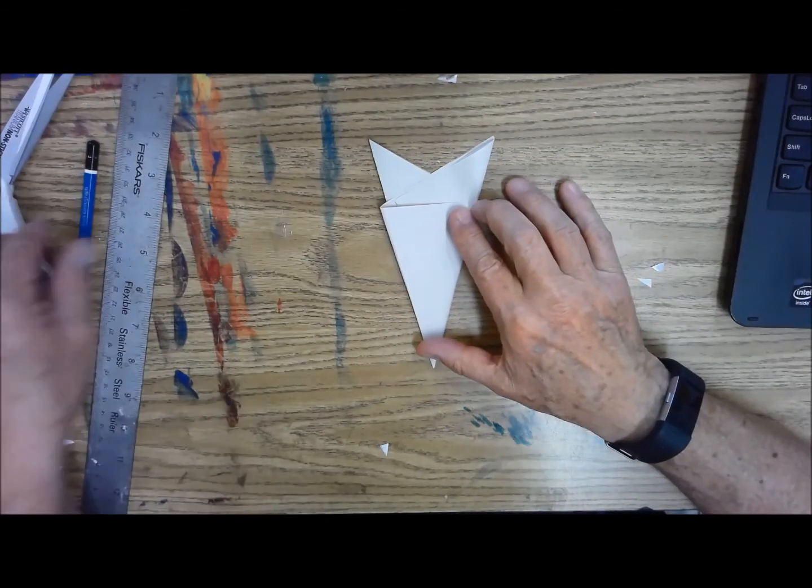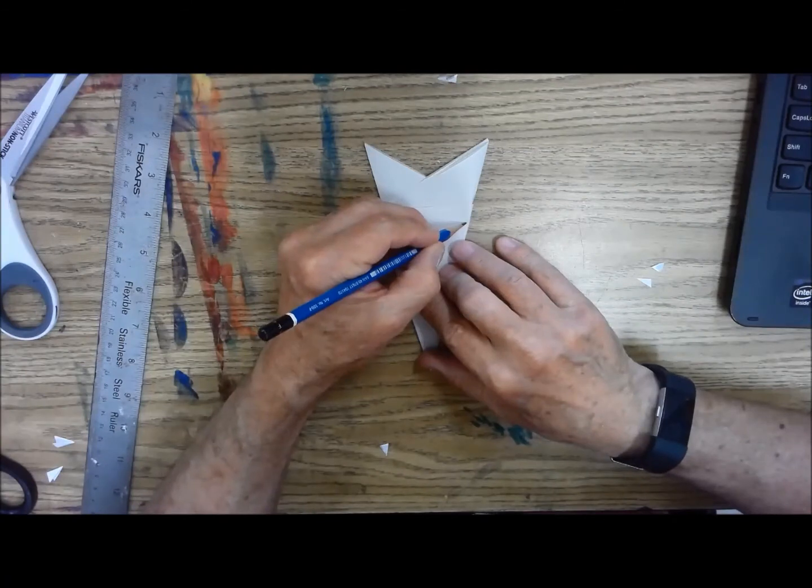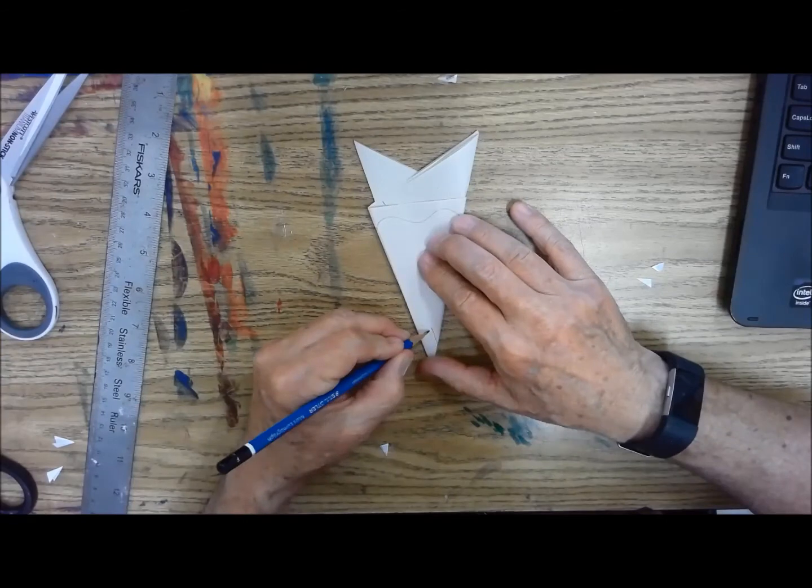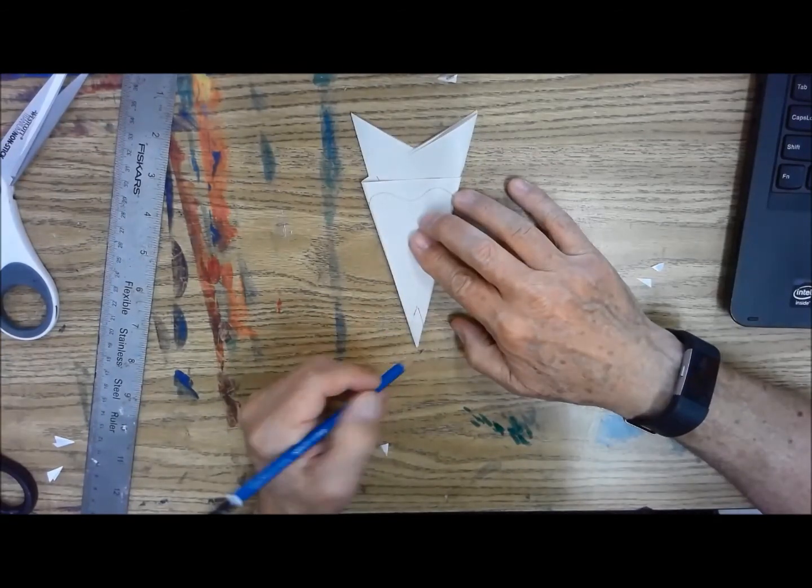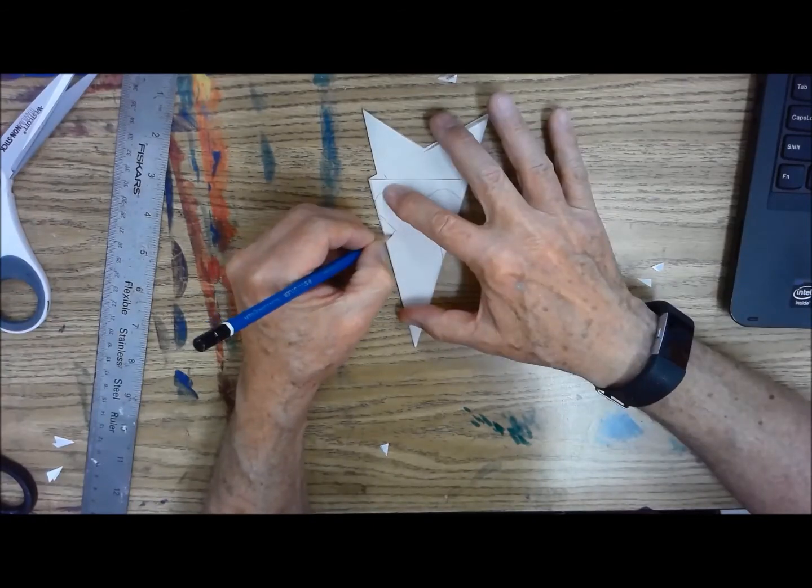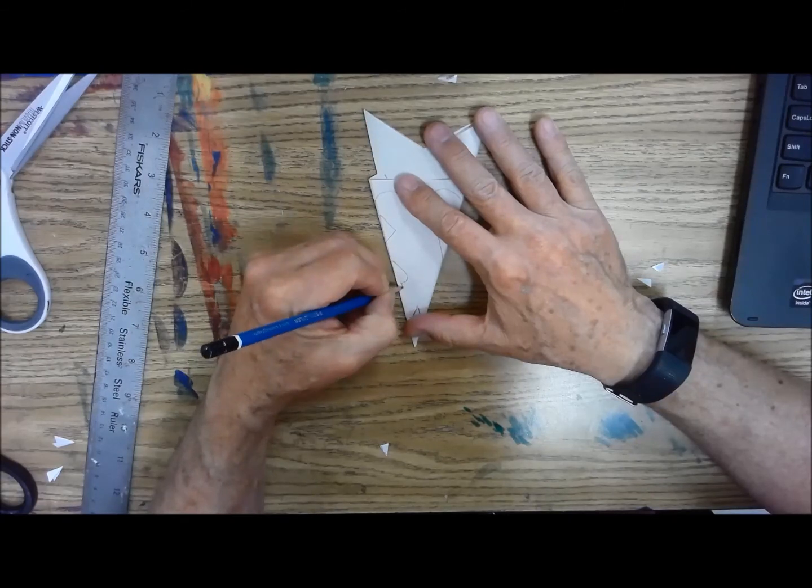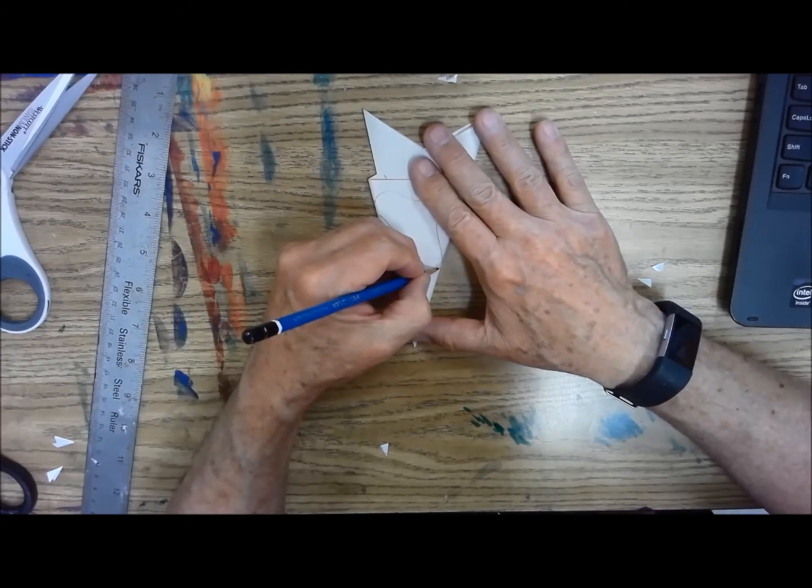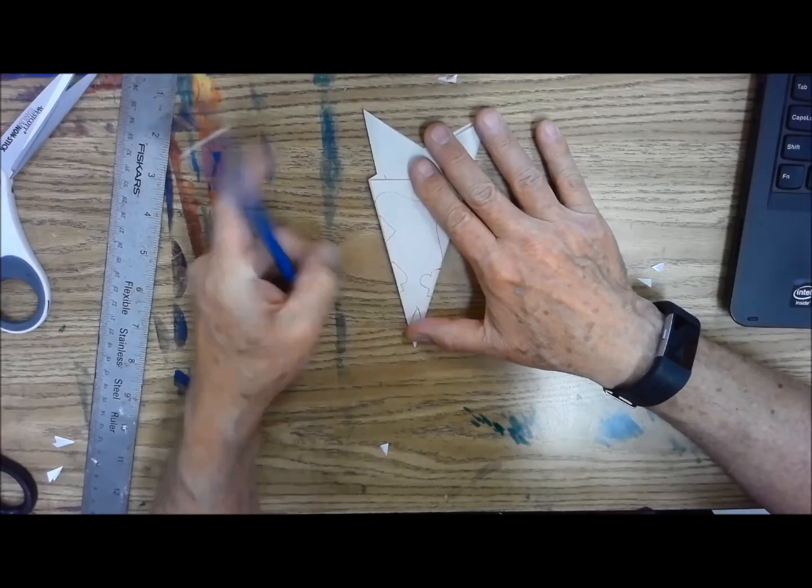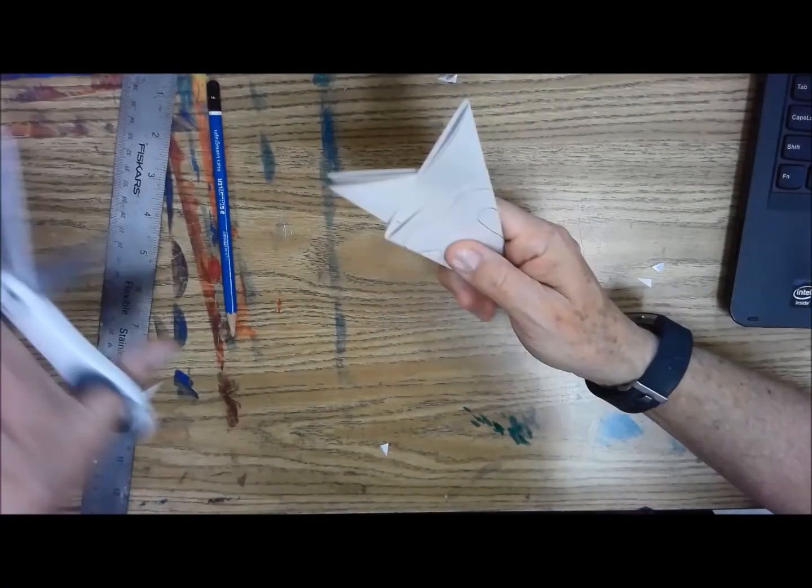And then you can either cut your snowflake out freehand. I like to go ahead and draw the shapes that I'm going to cut out just that way I don't make any mistakes. If you put a little delta shape down there at the bottom you're going to get a star in the middle. And there we go. So we've got some shapes on there.